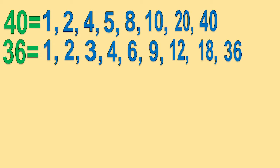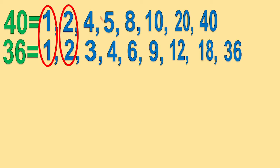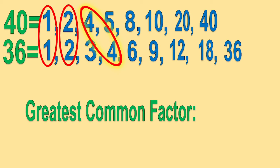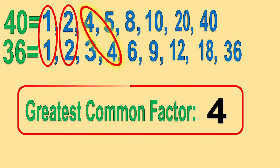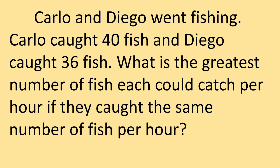Now, encircle the common factors. We have 1, 2, and 4. Identify the largest number in common — we have 4. So the greatest common factor is 4. The greatest number of fish each could catch per hour if they caught the same number of fish per hour is 4.